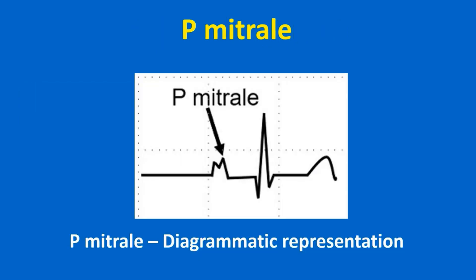P mitral is a notched and broad P wave with a taller second peak, indicating left atrial enlargement. It may be noted that the initial part of the P wave is contributed by the right atrium as it is activated first, and the second part by the left atrium which is activated later. It is associated with a prominent negative deflection of the P wave in V1, the left atrial component.